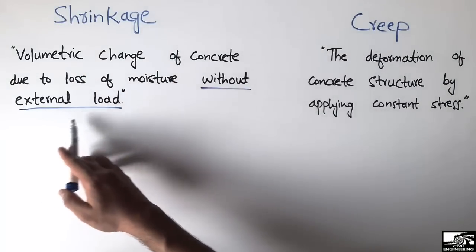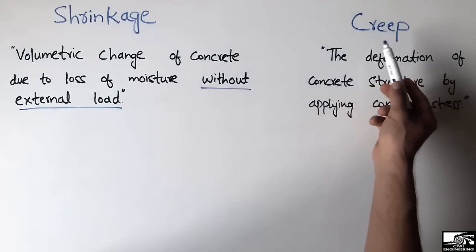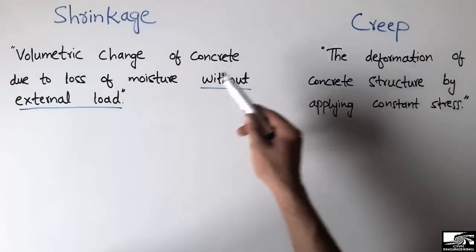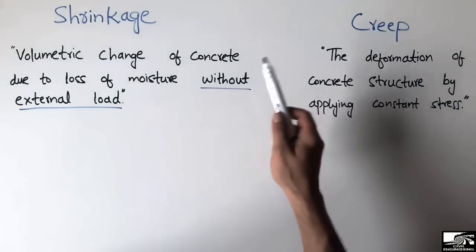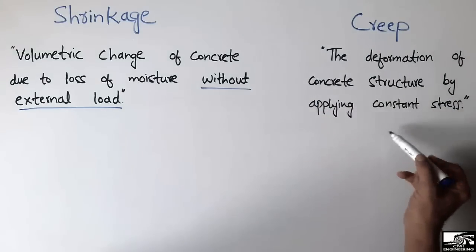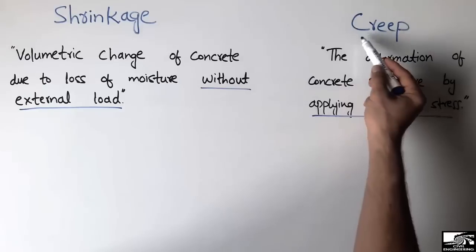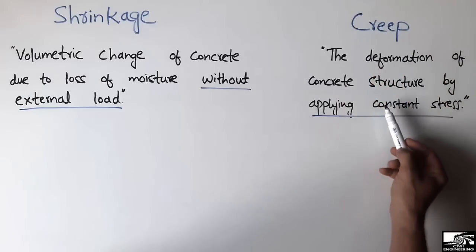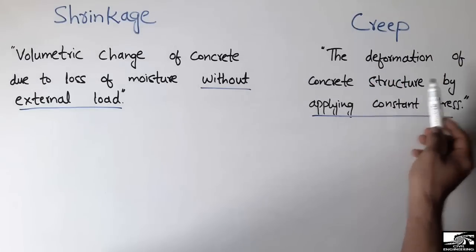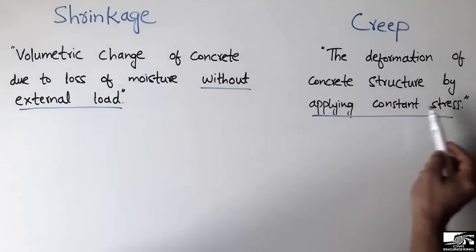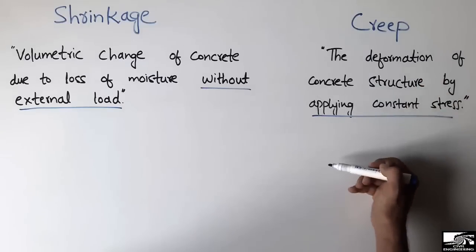In the case of creep, the key difference from shrinkage is the application of a constant stress. Creep can be defined as the deformation of a concrete structure when a constant stress is applied over time. This time-dependent deformation under sustained load is known as the creep phenomenon.